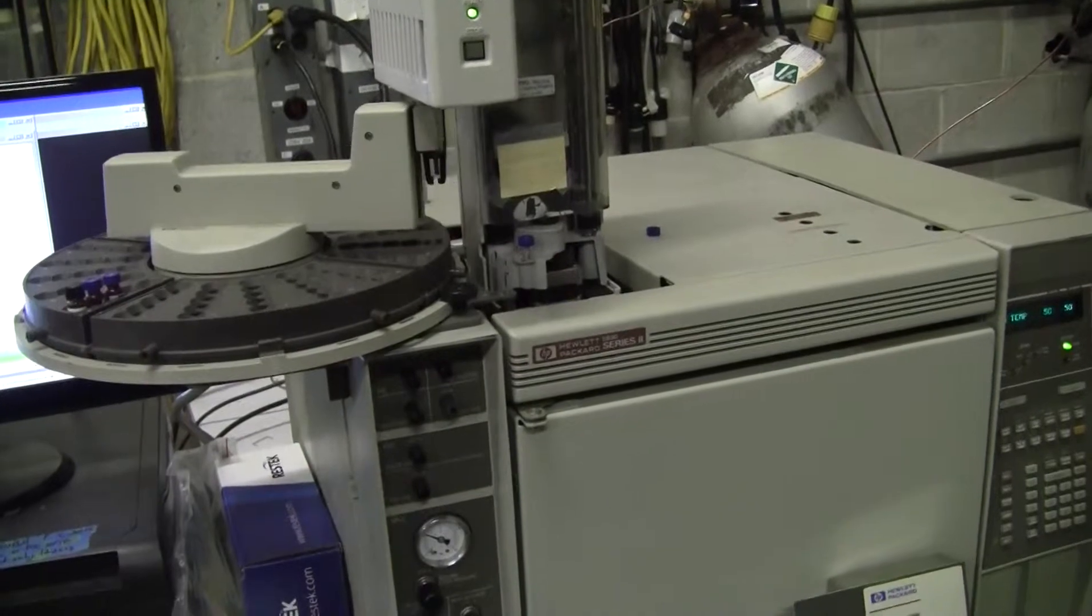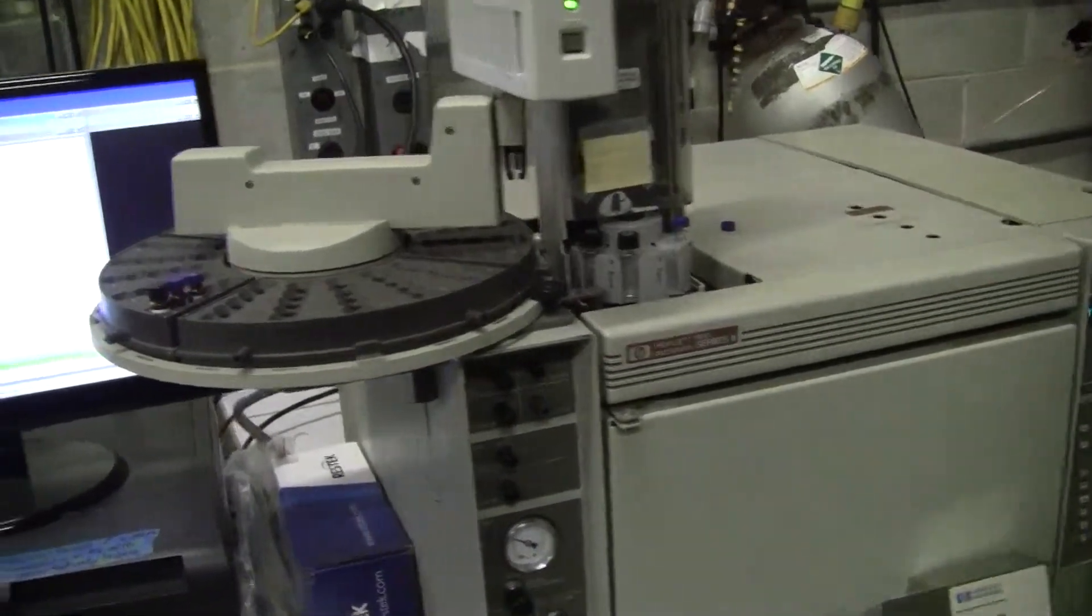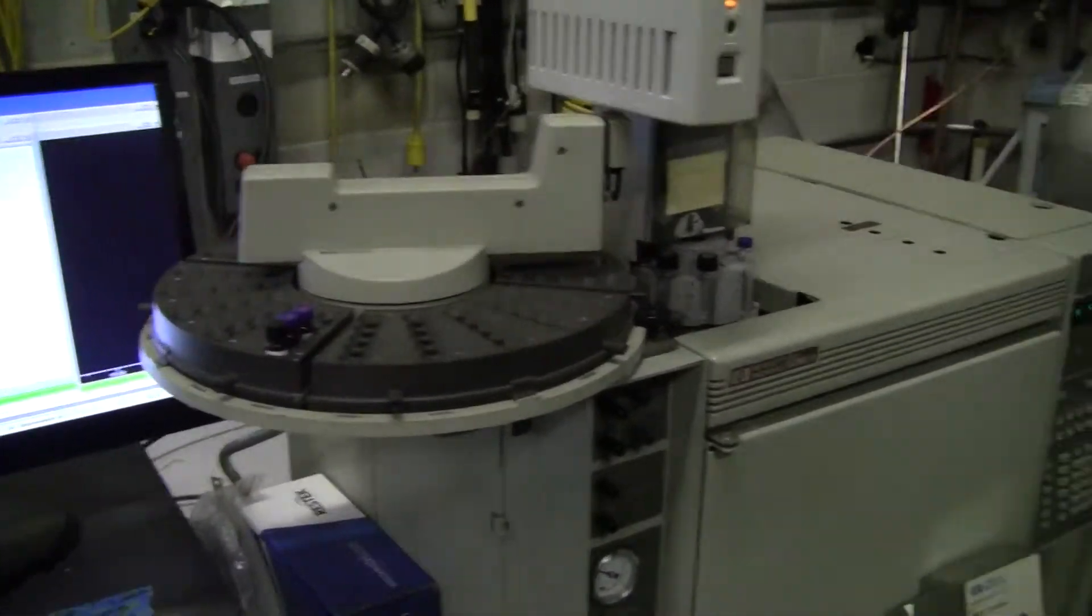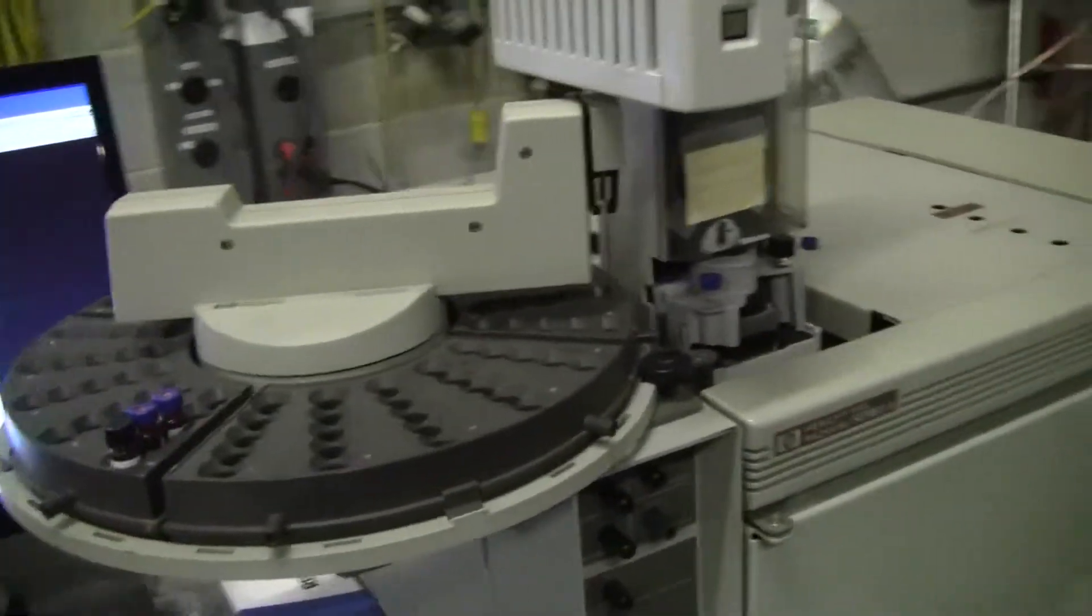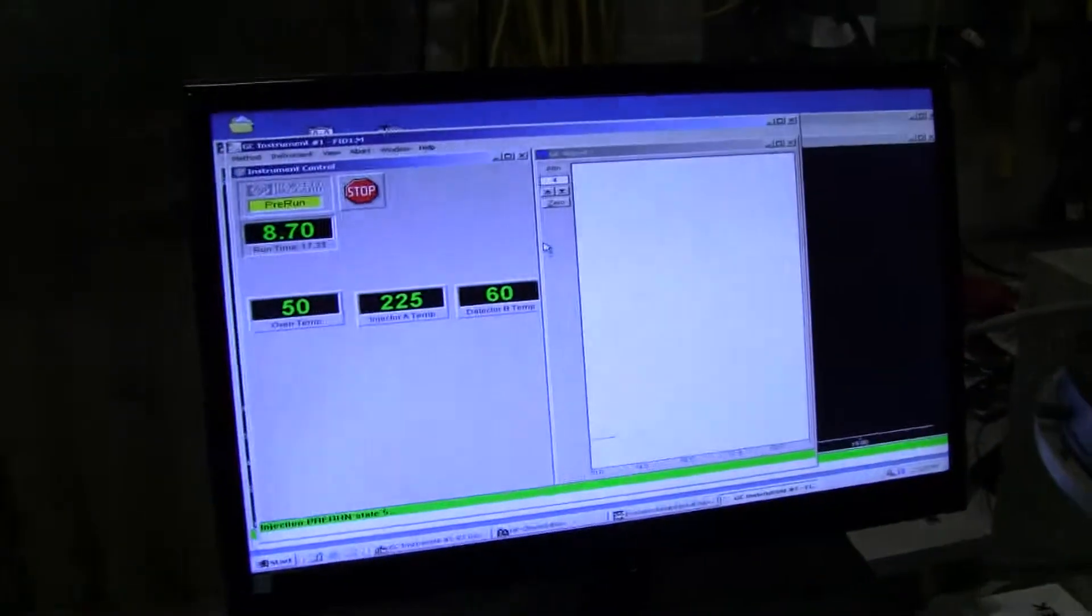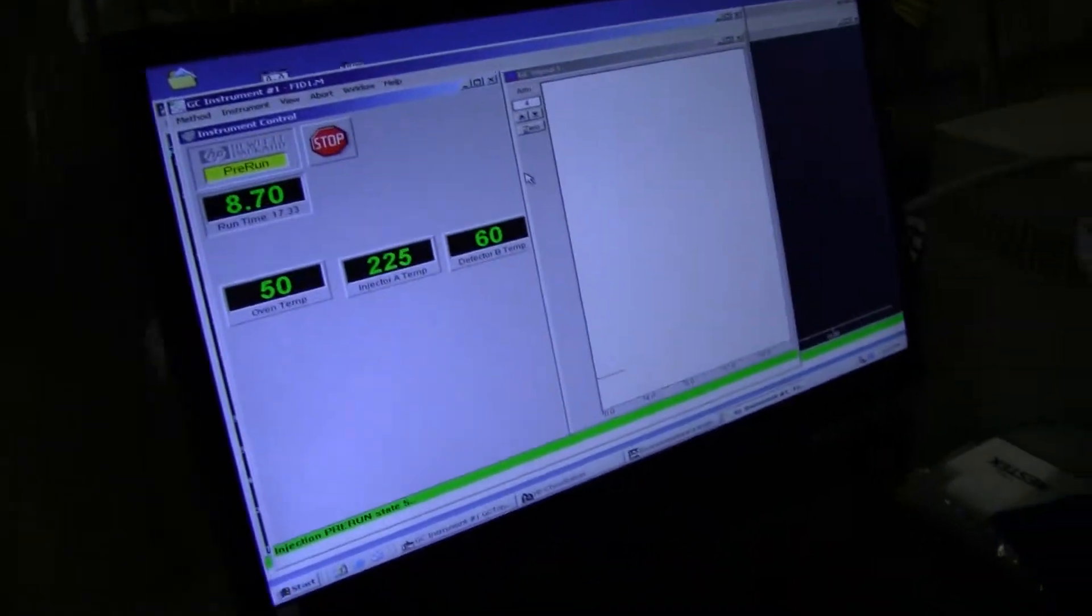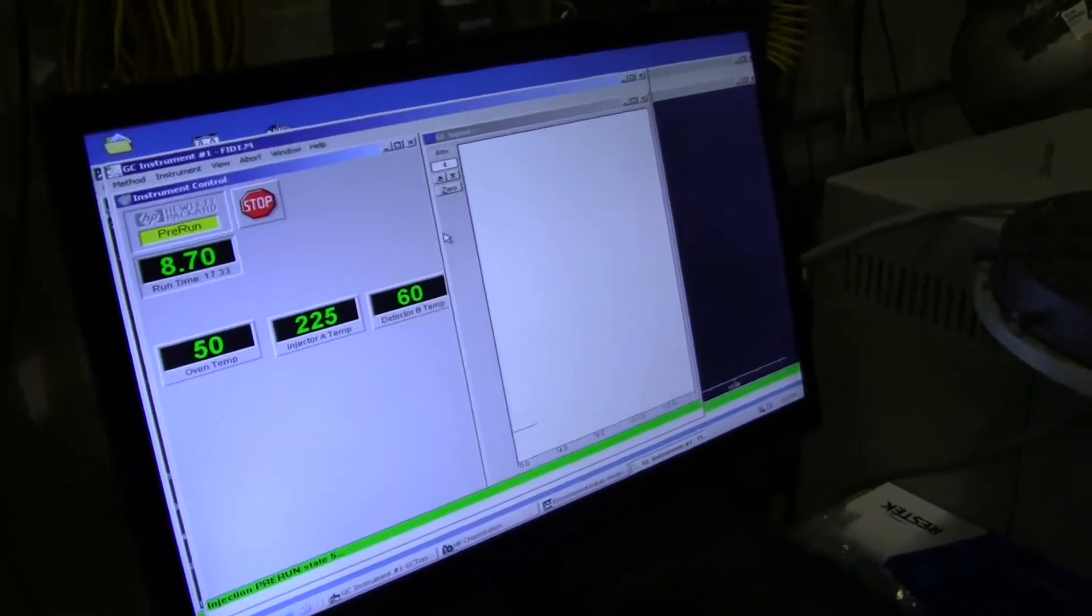this demonstration is to show how the chemstation software, and this is the chemstation mass spec software, really can be applied to running just a GC.